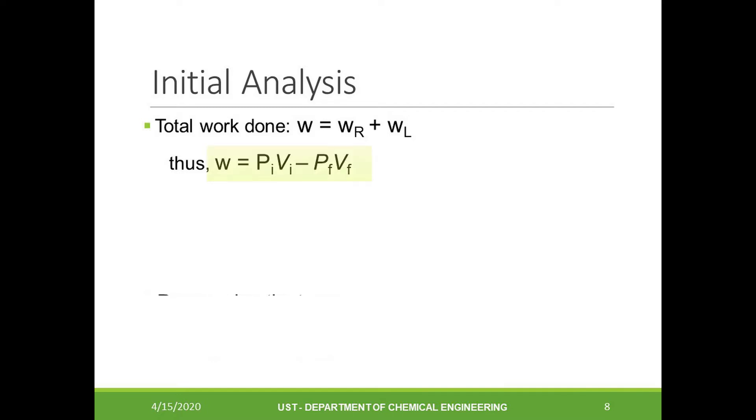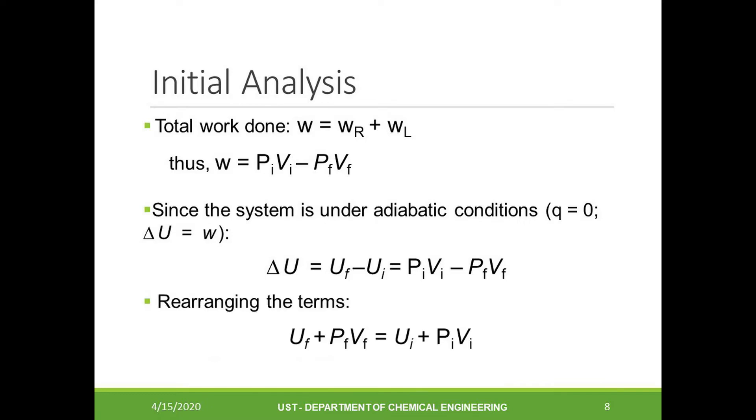Since the process is adiabatic, the total change in internal energy is just equal to work, or U2 minus U1 is equal to P1V1 minus P2V2. We can rearrange the terms and notice that U plus PV is equal to enthalpy. We can thus say that the enthalpy on both sides during the process are equal. This condition is known as isoenthalphic.